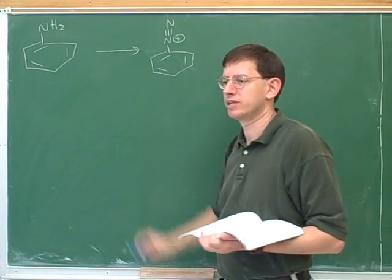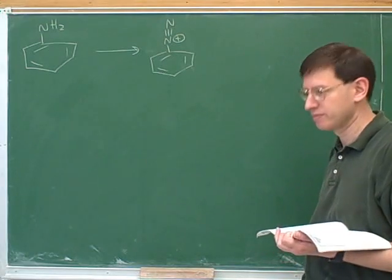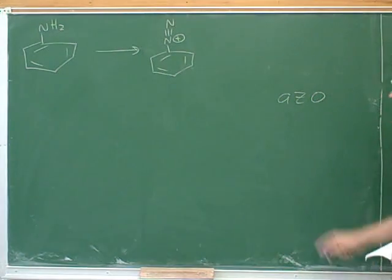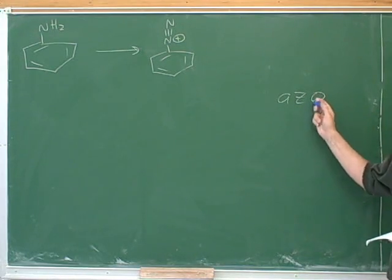This is what we would call a diazonium cation. Incidentally, azo means nitrogen.